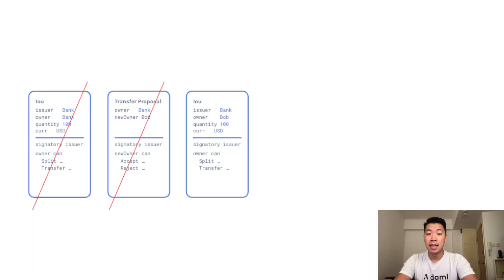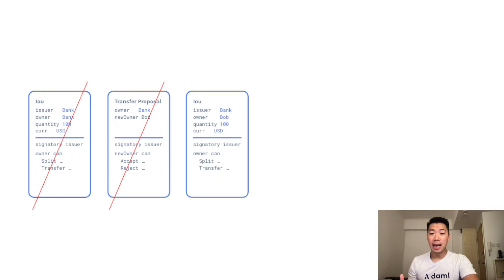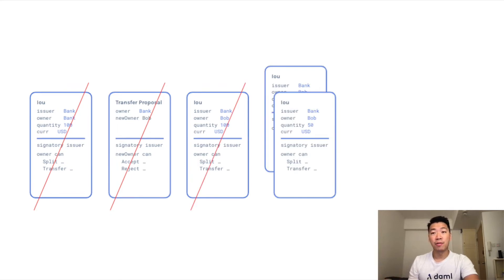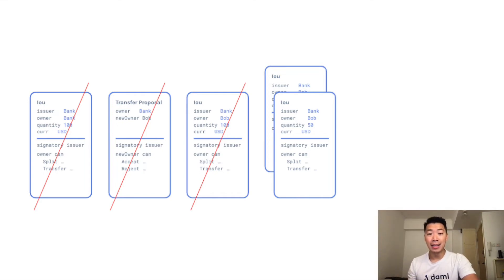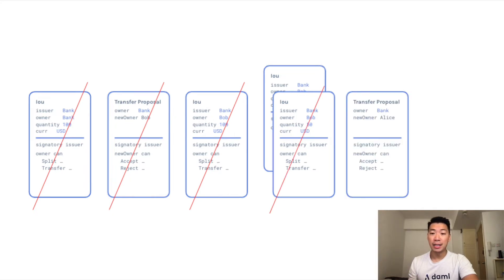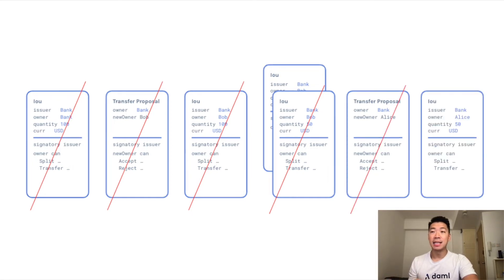The new IOU still shows $100 with the same split and transfer choices. When Bob exercises his split choice, it generates two IOU contracts each worth $50 with identical rights and obligations. Bob can then transfer one of these to Alice, which archives that IOU contract and creates a transfer proposal contract with Alice as the new owner. Alice has the right to accept or reject, and once she accepts, the transfer proposal is archived and a new IOU with Alice as owner is created.